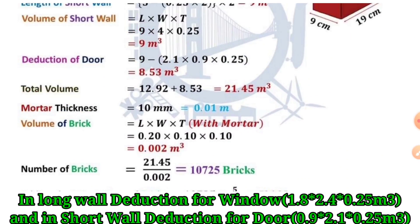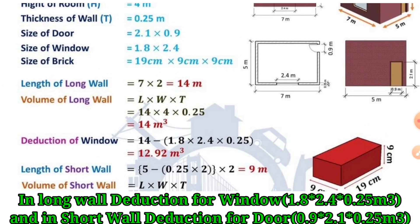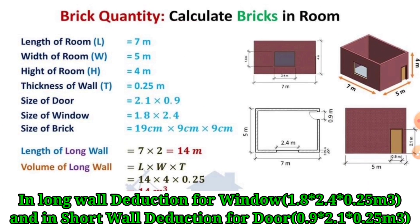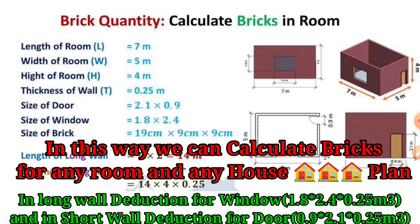In one house of this dimension, approximately 11,000 bricks are required. In this way, we can calculate the number of bricks for any type of room and any dimension. Thanks for watching.